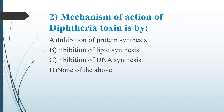Second question: The mechanism of action of diphtheria toxin is — Option A: Inhibition of protein synthesis. Option B: Inhibition of lipid synthesis. Option C: Inhibition of DNA synthesis. Option D: None of the above. The answer is Option A, inhibition of protein synthesis.